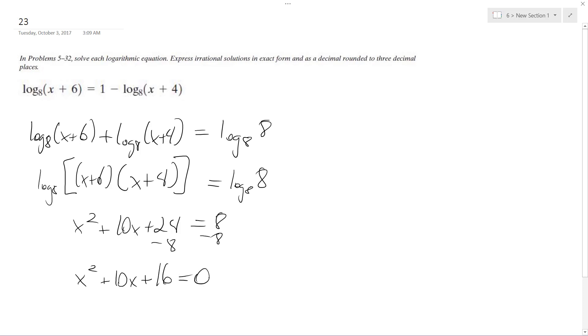And this breaks down to be x plus 8, x plus 2 equals 0, and I am left with x is equal to negative 8 and negative 2, and those are my roots, and those are my solutions. That's it.